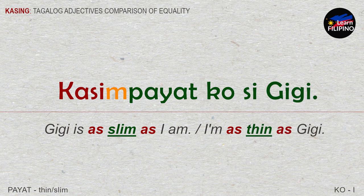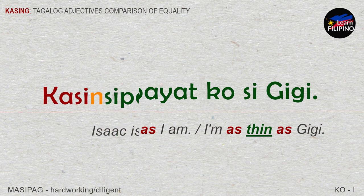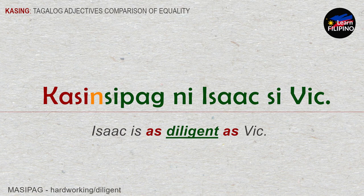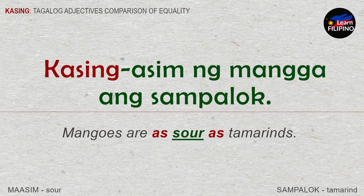'Kasimpayat ko si Gigi.' Gigi is as slim as I am, or I'm as thin as Gigi. 'Kasinsipag ni Isaac si Vic.' Isaac is as diligent as Vic. 'Kasingasim ng mangga ang sampalok.' Mangoes are as sour as tamarinds.